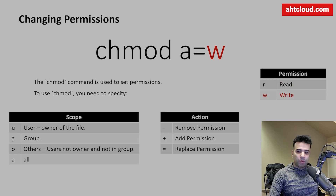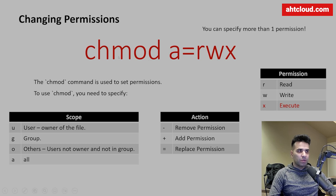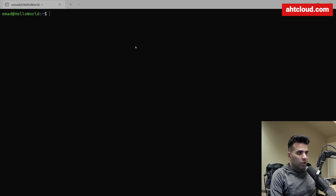For the permission value, there are three options: 'r' for read, 'w' for write, and 'x' for execute. You can also specify more than one at a time, such as 'rwx' for read, write, and execute. So a command like `chmod a=rwx filename` sets all users to read, write, and execute, replacing whatever was previously assigned.